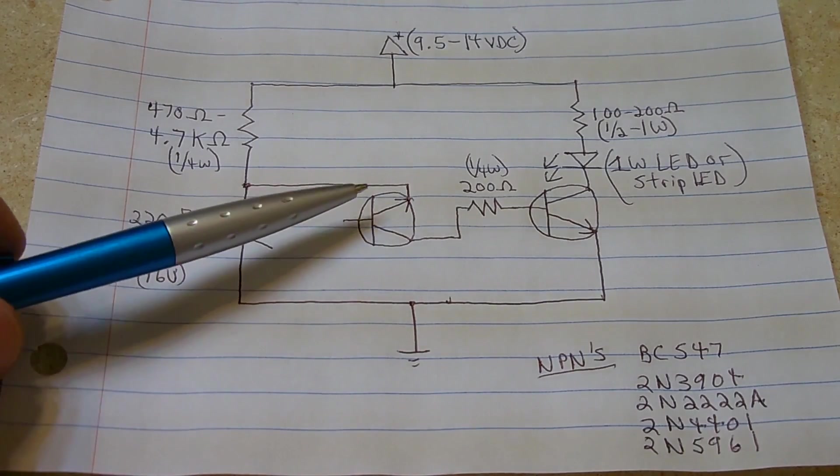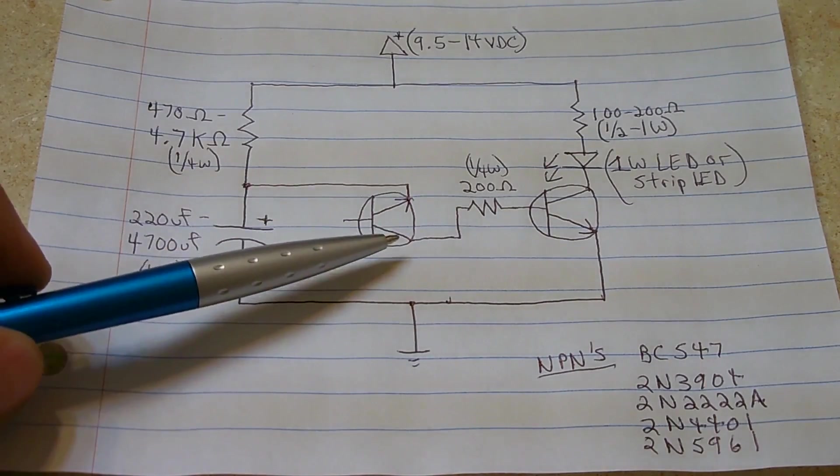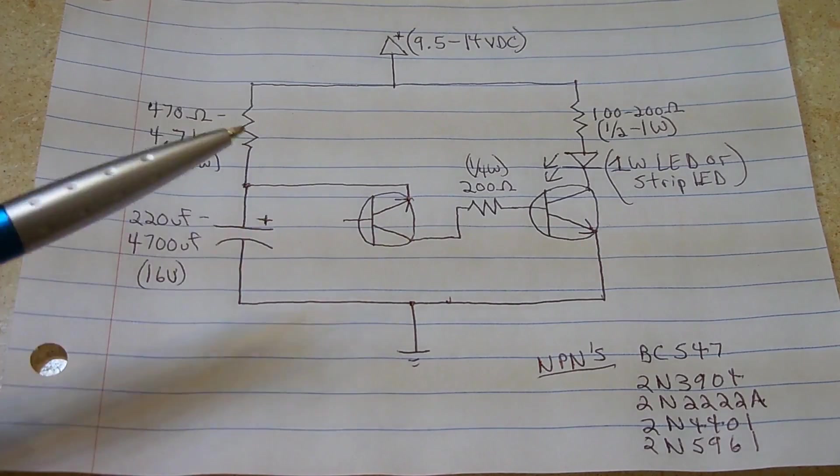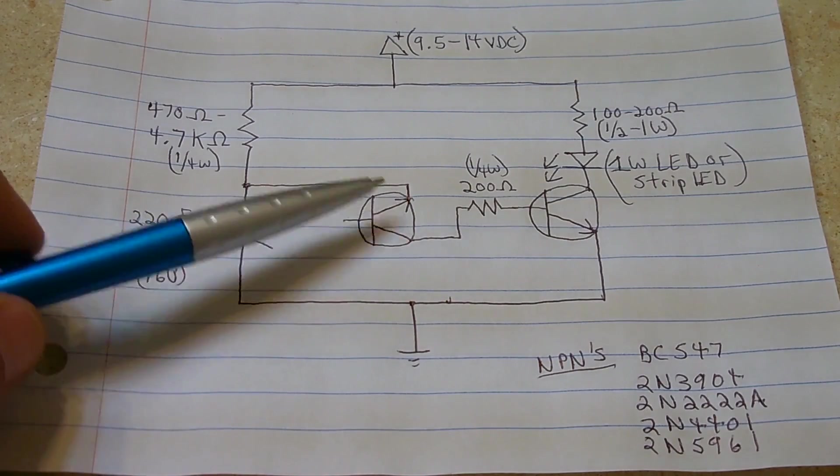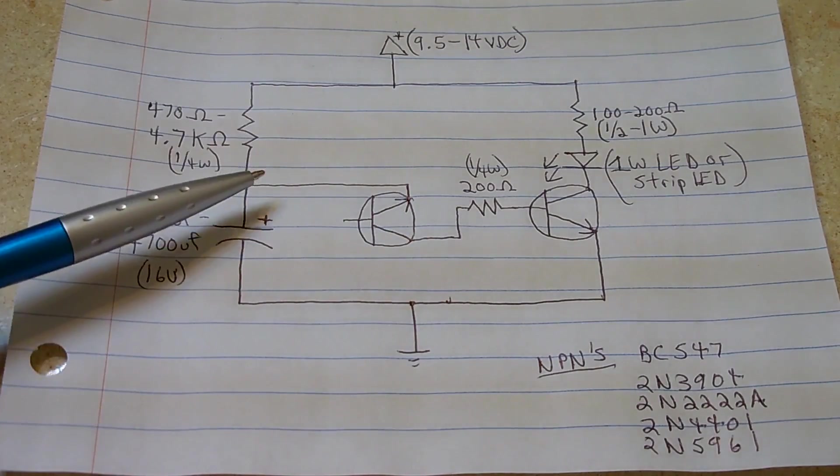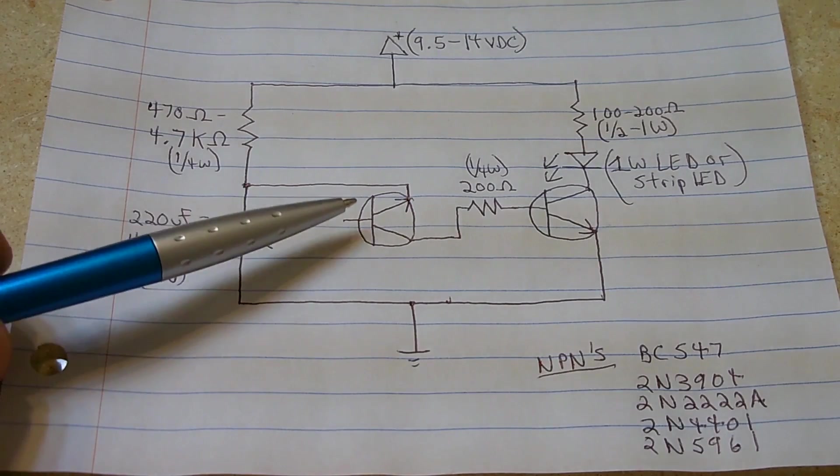Over here you have a transistor that's connected backwards. Normally the collector goes to the positive rail, the emitter goes to the negative, and then you turn the transistor on and off using a positive voltage applied to the base.